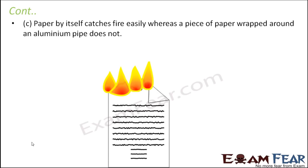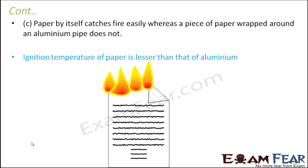Paper by itself catches fire easily, whereas a piece of paper wrapped around an aluminium pipe does not. How easily an object catches fire depends on its ignition temperature. Substances with a very low ignition temperature catch fire very easily. The ignition temperature of paper is very low, so it catches fire easily. However, the ignition temperature of aluminium is quite high. When paper is wrapped around aluminium, the overall ignition temperature increases, and that is why it does not catch fire as easily.